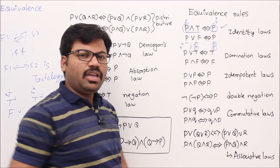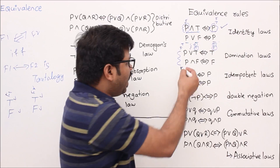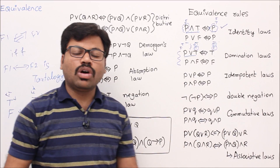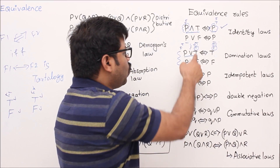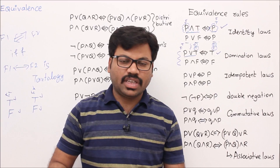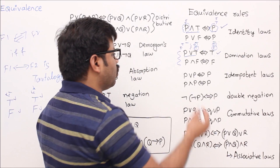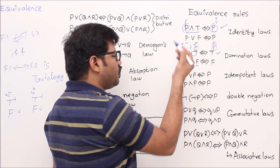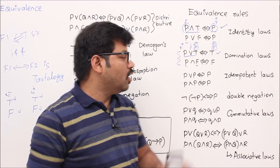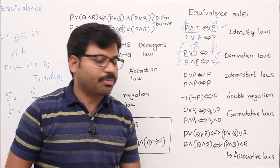Now come to the second set of rules. p∨true is equivalent to true. The reason is simple: true∨true is true, true∨false is true — true or anything is true. That is the domination law. Similarly, p∧false is always false: false∧true is false, false∧false is false. So p∧false is equivalent to false. These two are domination rules.